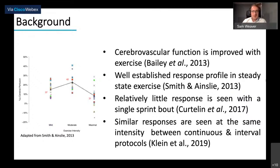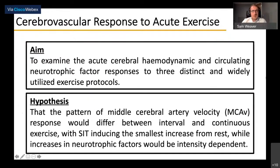Kirtland et al. 2017 showed that a single all-out sprint bout drove relatively little hemodynamic response, whereas Klein et al. 2019 showed that carrying out the same workload either as continuous or interval-based protocol produced relatively similar changes. With that in mind, we examined the acute cerebral hemodynamic and circulating neurotrophic factor responses to three distinct protocols: two from a clinical setting and one from an athletic training perspective.